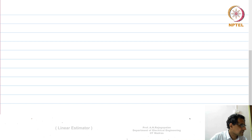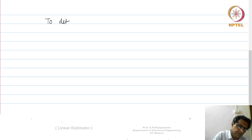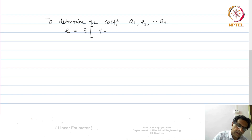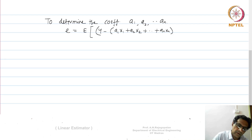To determine the coefficients a₁ to aₙ, we define the error as E = E[(y − (a₁x₁ + a₂x₂ + ... + aₙxₙ))²]. We want this quantity to be minimum.